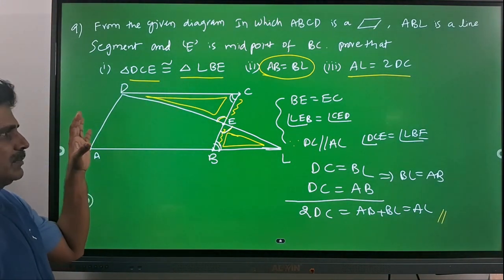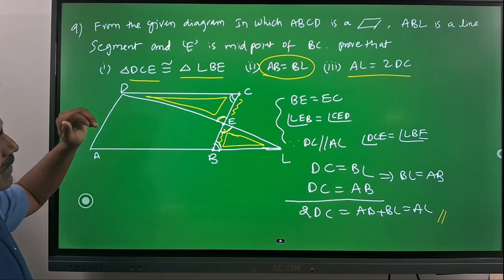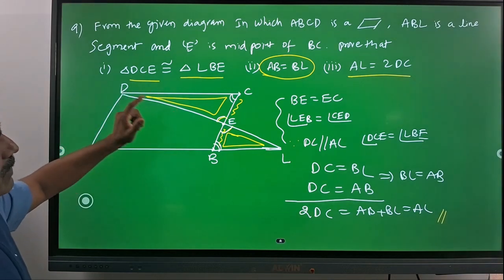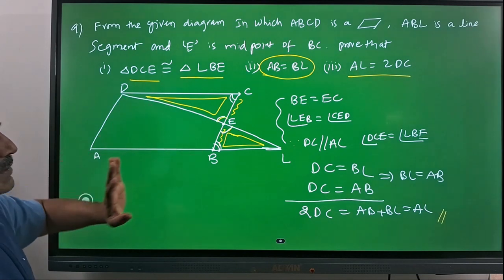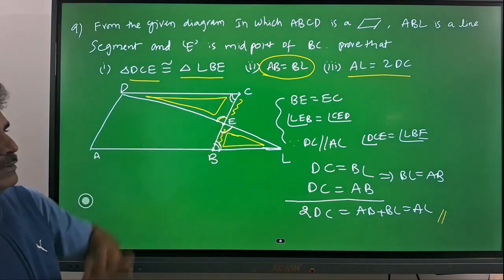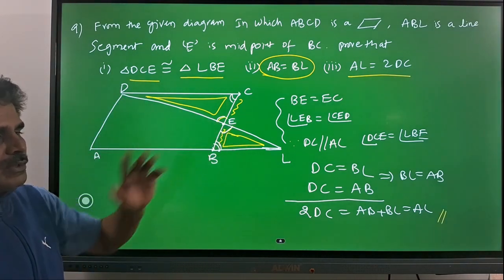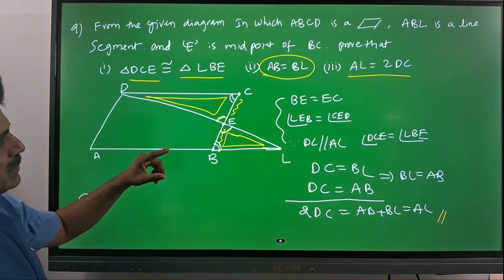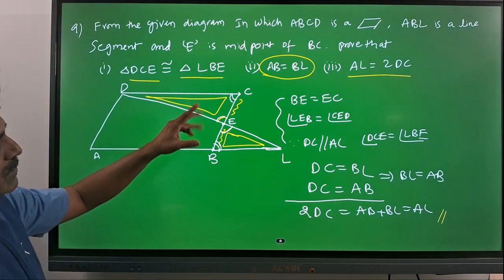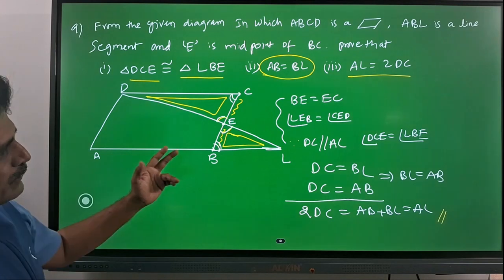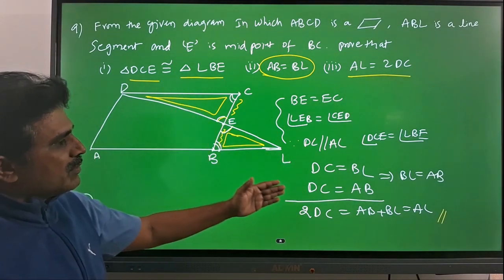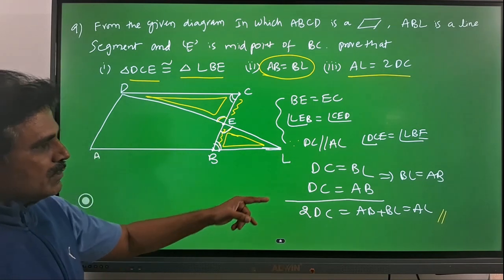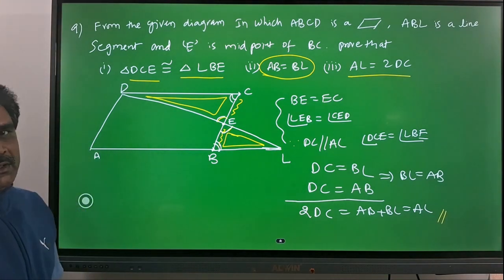Here from the given parallelogram and other structures, we are observing two triangles. They are asking to prove those two triangles are congruent, and we did it. We proved those two are congruent. Later we need to prove some side relations. From the congruency we got some expressions, and from the parallelogram we got one expression. By comparing those two, we got the remaining equalities.